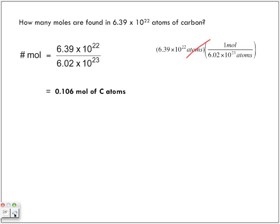We know that we have 6.02 times 10 to the power of 23 atoms in one mole. So we can use it in one of these two ways, and we get the following answer: 0.106 moles of carbon atoms.